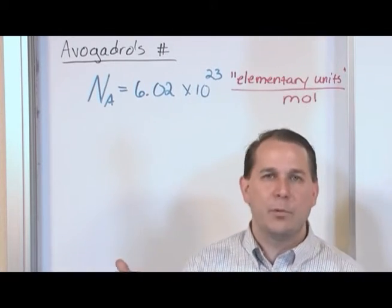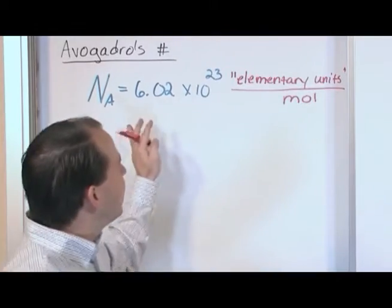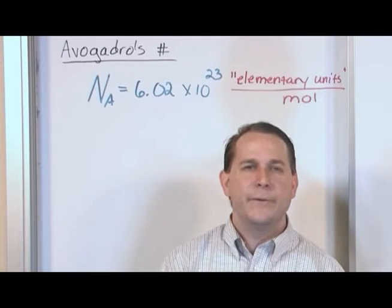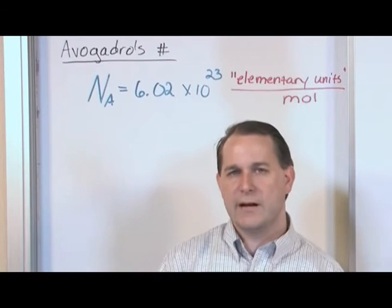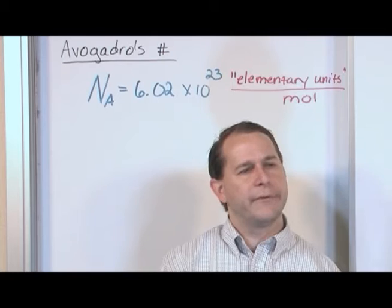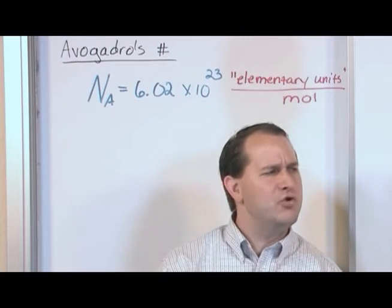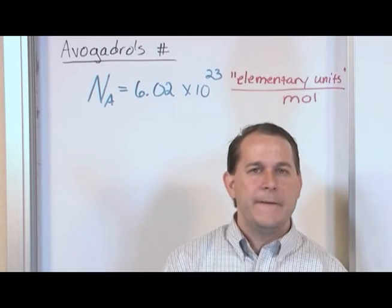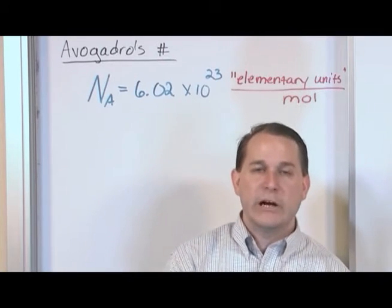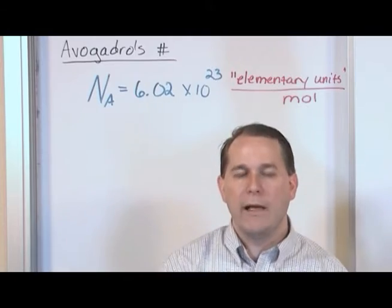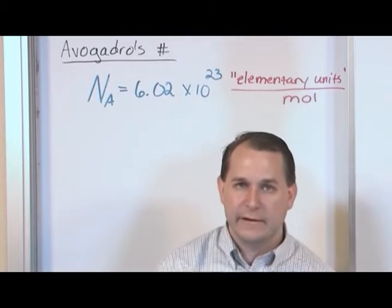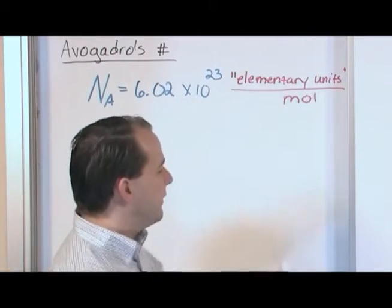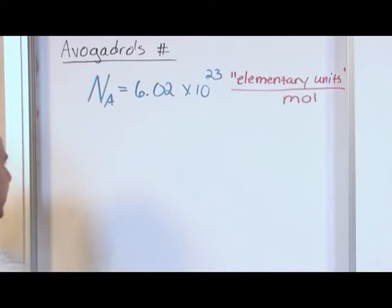And so the same thing is going to happen with the mole. 6.02 times 10 to the 23rd is such a number that has become so ingrained in chemistry and so useful that frequently you don't even talk about molecules a lot of times. You say, give me two moles of sodium chloride or give me two moles of hydrogen or give me 16.5 moles of calcium. That's very common. And so you frequently are dealing with the unit of a mole as in amount of a substance. And the reason you can do that is because a mole is defined to be so many elementary units. Now let's talk about this elementary unit thing.